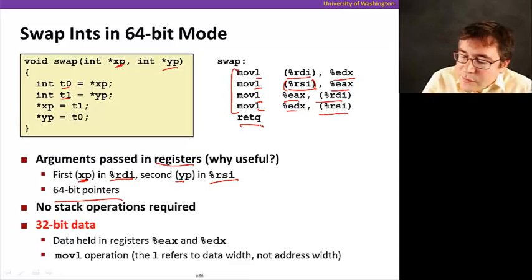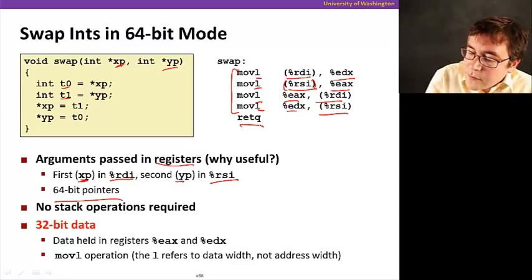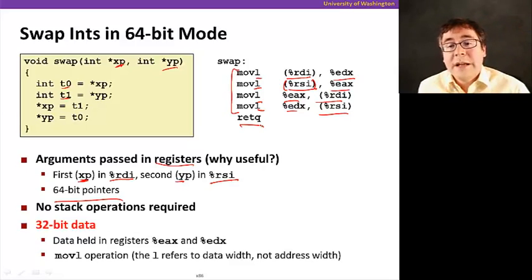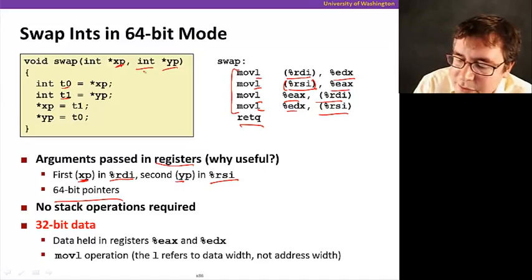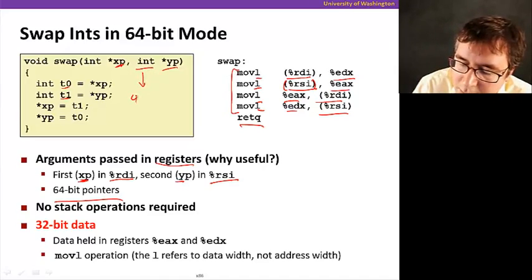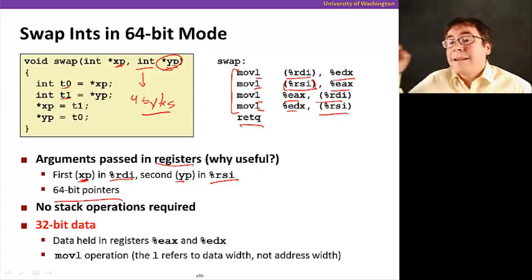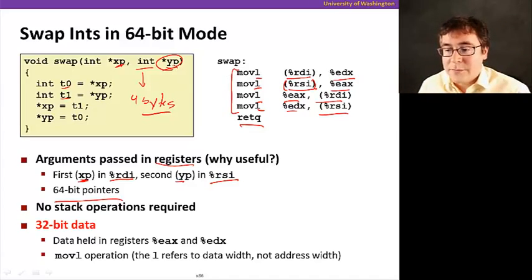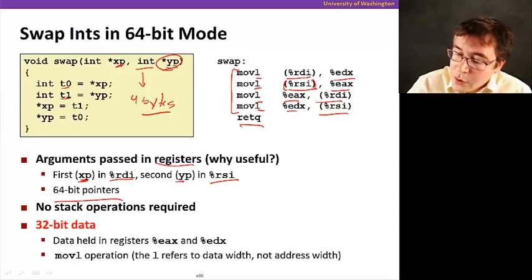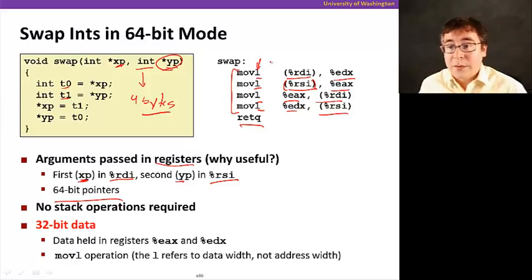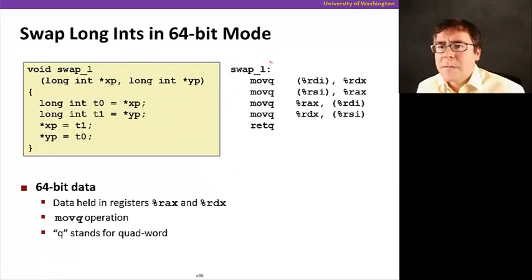Note that we still moved 32 bits worth of data. Why is that? Well, because it's integers here, happens to be 4 bytes long. Even though the pointer itself is 64 bits, the unit of data that it points to is a 4 byte integer. And we also used moveL still, because we're moving 4 bytes worth of data. We're still using the same type of instructions.